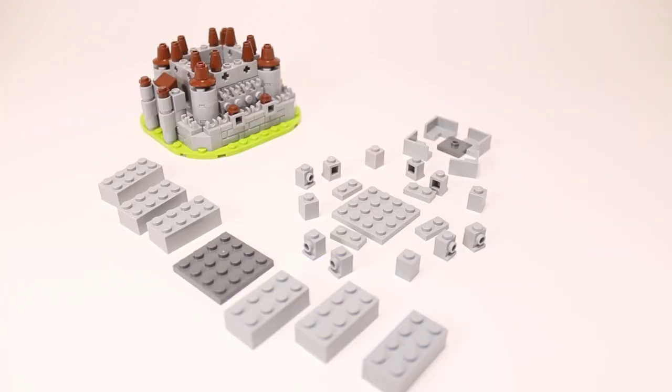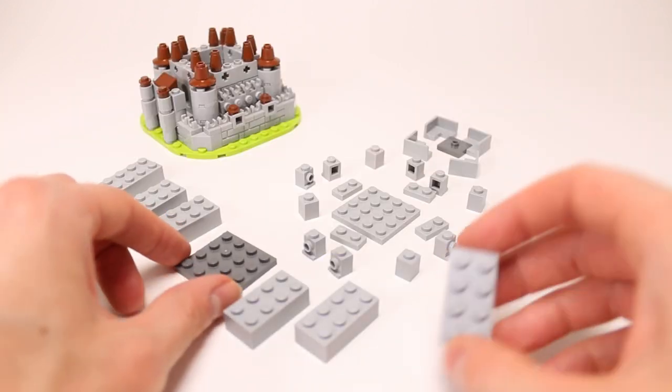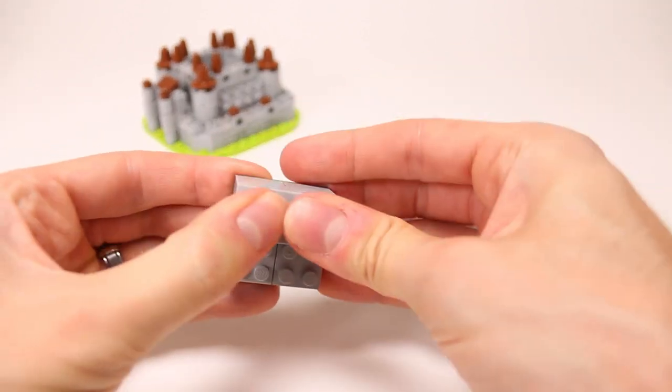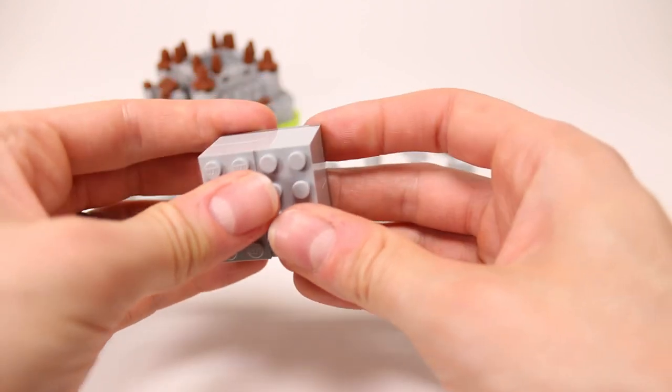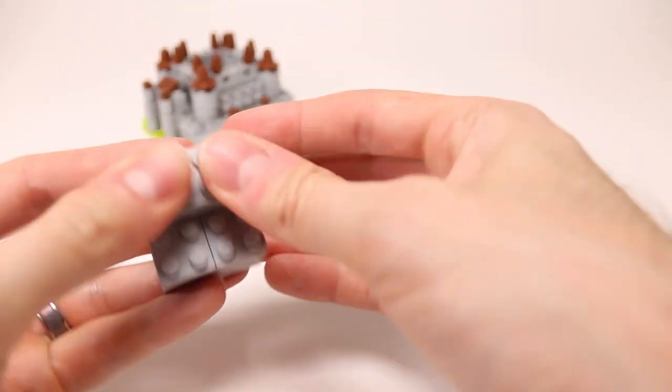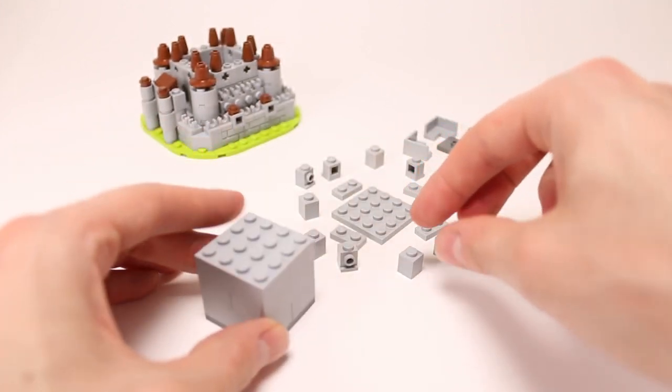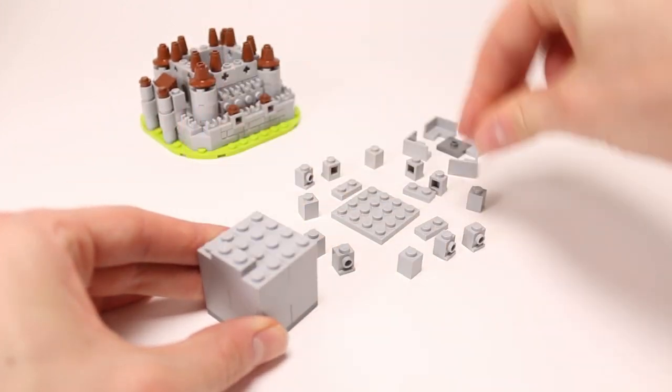Here are all the pieces that we're going to need for the next section of our tower. This section is the keep. This is the primary, final, piece of defensive battlements that you would find in a castle. This is usually where the king would live, and this is certainly where I would want to live.